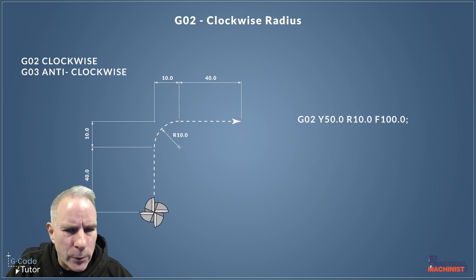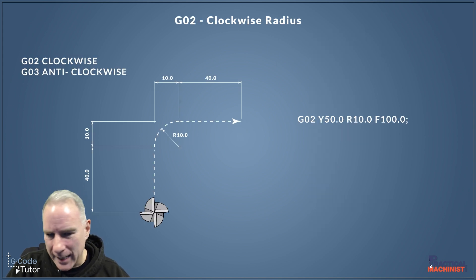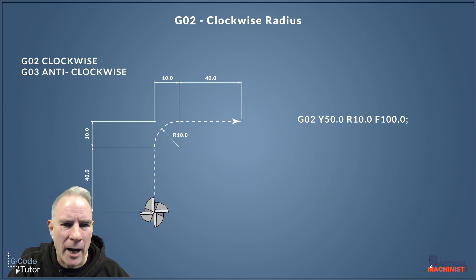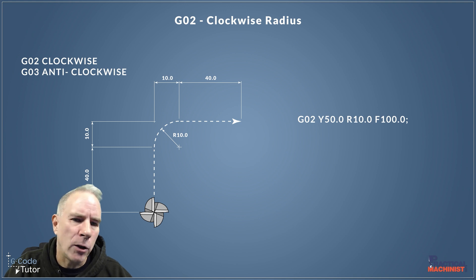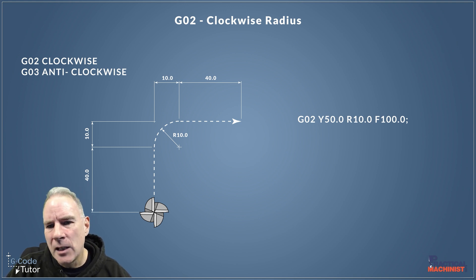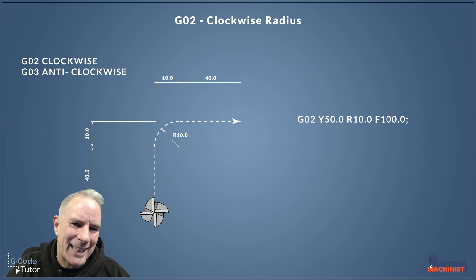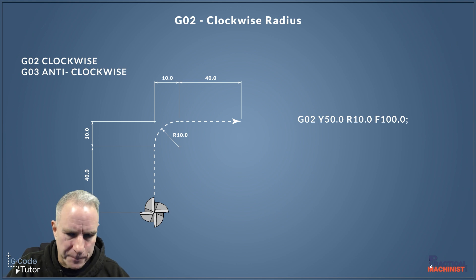Next up we have radial coordinates. When we're coming in to turn a clockwise or anti-clockwise radius, we can use an R value to designate the size of that radius.